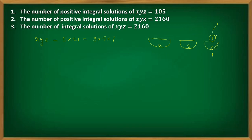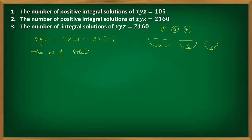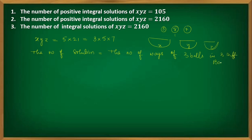The number of solutions of this equation is the same as the number of ways of distributing these three different balls — numbered 3, 5, and 7 — into three different boxes. How many ways can you distribute three balls into three different boxes? That is the question.